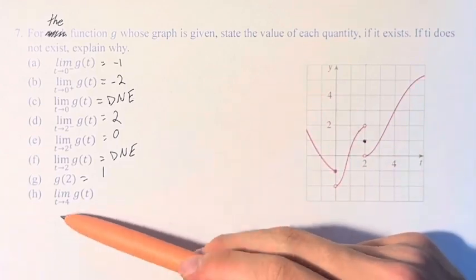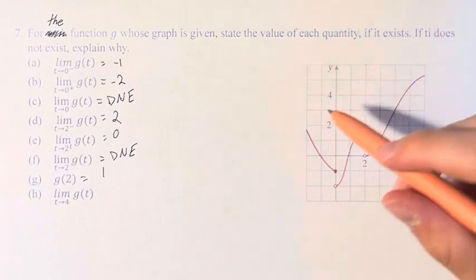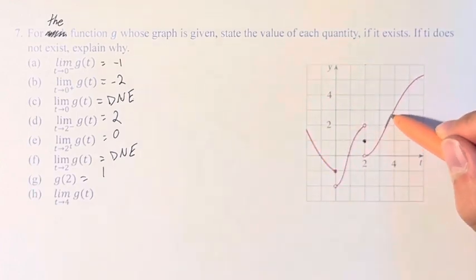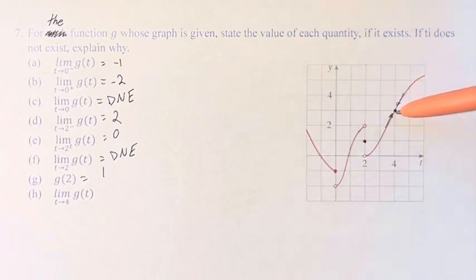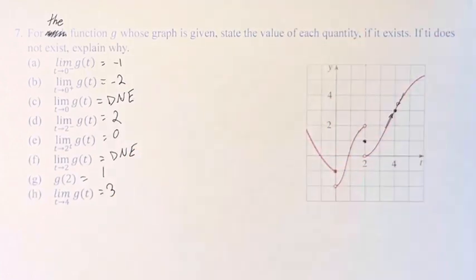And finally, we have the limit as t approaches 4 of g(t). This, we can see from the left and the right, are both approaching this point, meaning the limit does exist at a value of approximately 3.7.